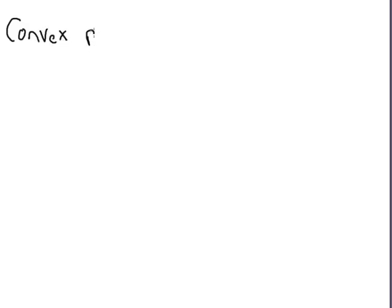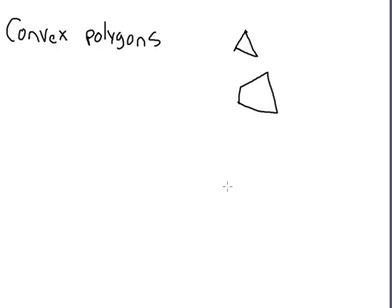Before we do anything else, let's make sure we're clear on what kind of shapes we're talking about. This tutorial is about convex polygons. 'Poly' means many, and this is about any multi-sided shape. By the end of this tutorial you should be able to talk about triangles, quadrilaterals, pentagons — any polygon that's convex. I'll go over what convex means in a minute.